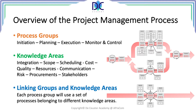What we have to do — and what has been done in this graph — is linking the different groups and knowledge areas. We will see in the next table that for every process group, different processes and knowledge areas are providing processes to these process groups.